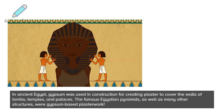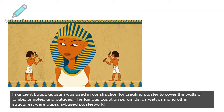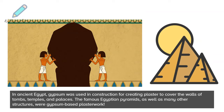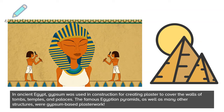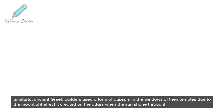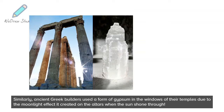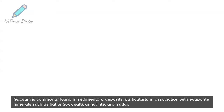In ancient Egypt, gypsum was used in construction for creating plaster to cover the walls of tombs, temples, and palaces. The famous Egyptian pyramids, as well as many other structures, featured gypsum-based plasterwork. Similarly, ancient Greek builders used a form of gypsum in the windows of their temples due to the moonlight effect it created on the altars when the sun shone through.